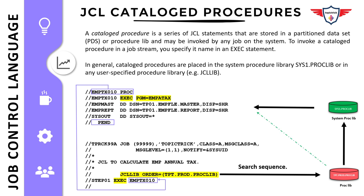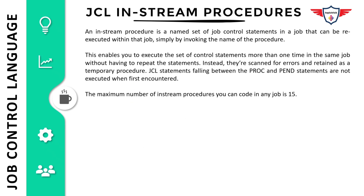A JCL in-stream procedure is a set of job control statements included within the job itself. You can invoke these in-stream procedures from the same JCL by providing the proc name. The JCL statements between the PROC and PEND keywords are not executed when first encountered — instead they are scanned for errors and retained as a temporary procedure, and are only executed when they are invoked from the JCL. At most you can include 15 in-stream procedures in a single JCL.